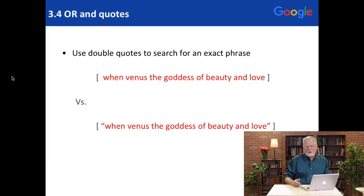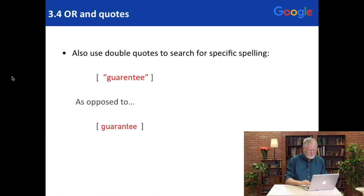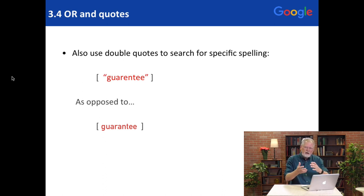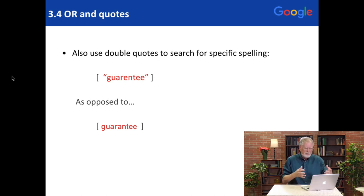The other reason we use double quotes is to make sure a word is spelled exactly the way we want. For instance, here's an example of a word I want to search for with this spelling: E-N-T-E-E at the end of 'guarantee.' A linguist told me there was once a debate about whether it should be spelled with A-N-T-E or E-N-T-E. So how do I find that? I'll show you.